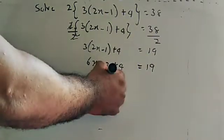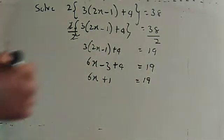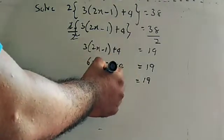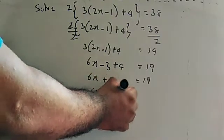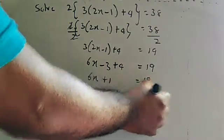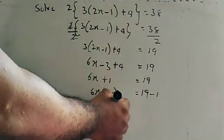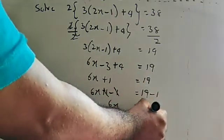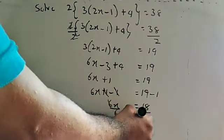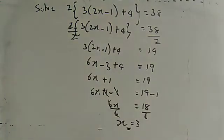To cancel plus 1, add minus 1 to both sides. Plus 1 and minus 1 cancel. Then 6x remains. Nineteen minus 1 equals 18. Now divide both sides by 6. Six and 6 cancel, leaving x. X is equal to 18 divided by 6, which is 3. The value of x is 3.